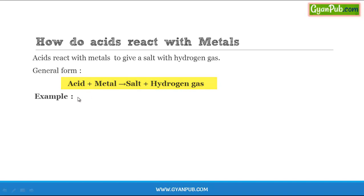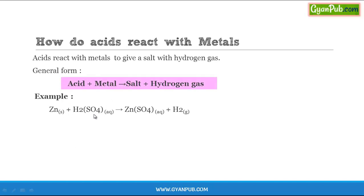For example, when zinc (Zn) is reacted with sulfuric acid (H₂SO₄), it forms zinc sulfate (ZnSO₄), which is a salt, and hydrogen gas (H₂). Here zinc is the metal and sulfuric acid is the acid. The formation of the salt takes place by displacing hydrogen from the acid.